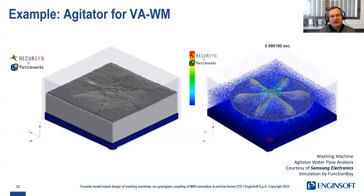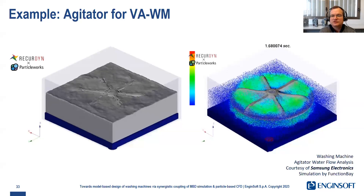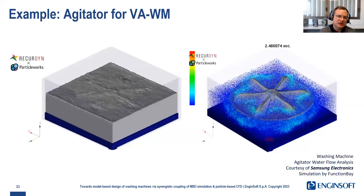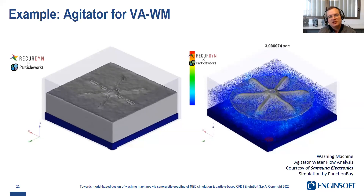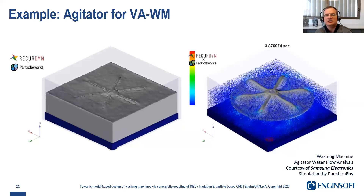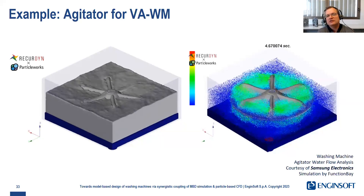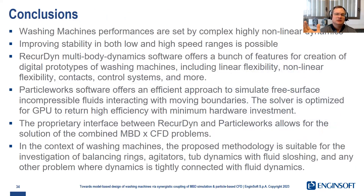You can use ParticleWorks in combination with RecurDyn also for simulating the agitator at the bottom of vertical axis washing machines. In this simulation the tub is not moving, but of course in reality you can run this simulation with the moving tub and look at the water behavior too.